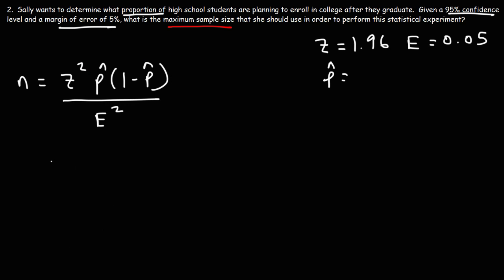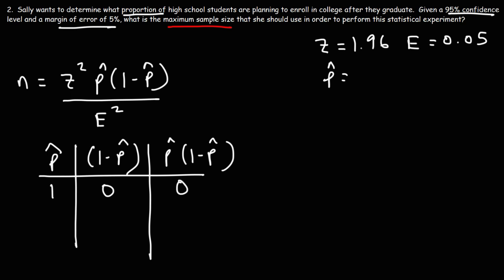Well let's plug in a few numbers. So let's say this is p̂, 1 minus p̂, and then on the right will be the product of these two figures. So the maximum value of p is 1. If we choose the value of 1 this is 0, the product will be 0 so that's not good.